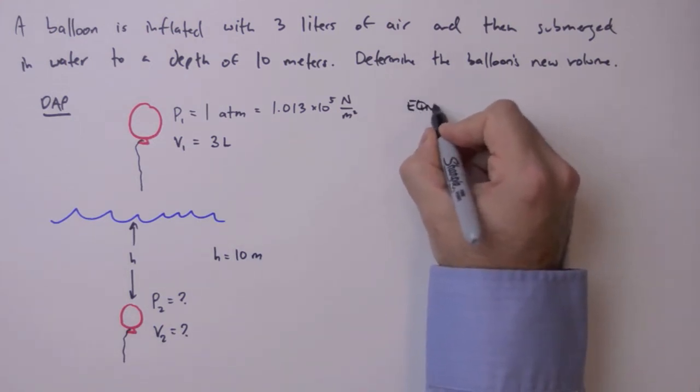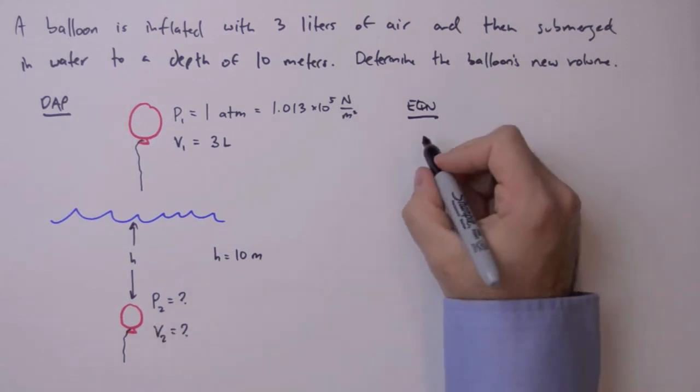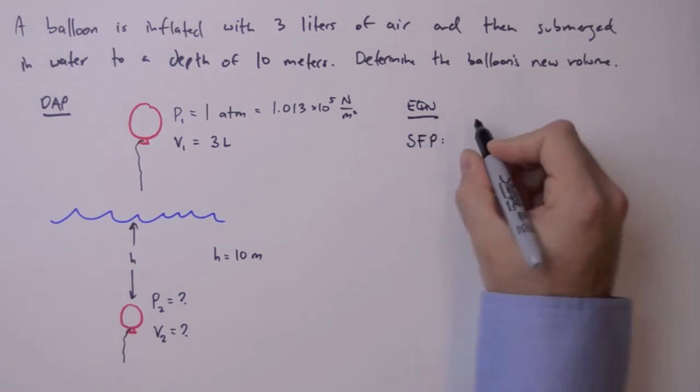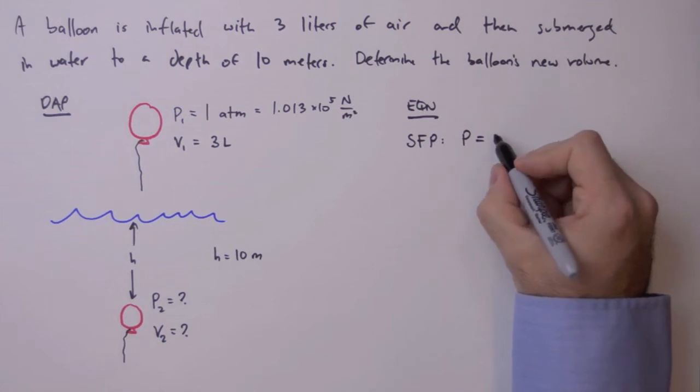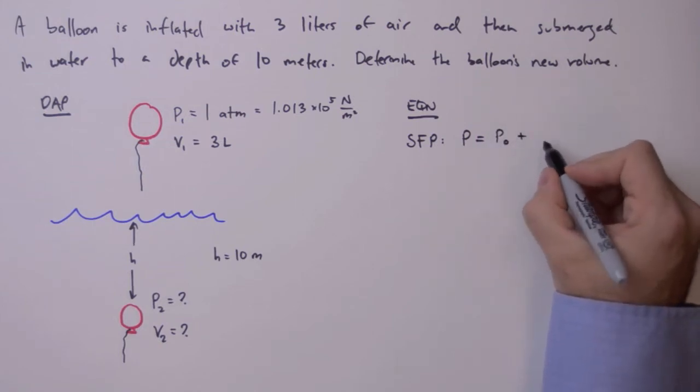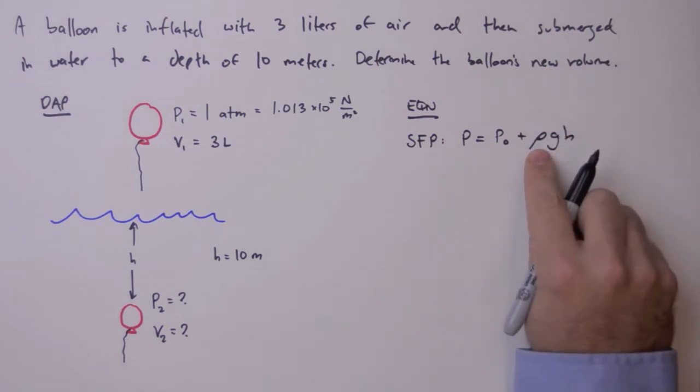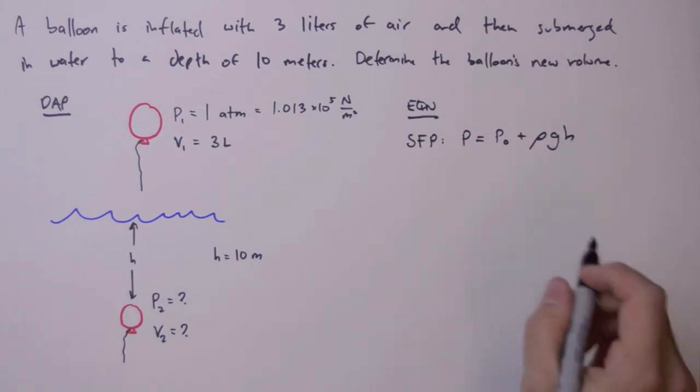We start by determining this pressure, and the way we'll do that is using a static fluid pressure equation, which is P, pressure at some depth H, is equal to P0, the pressure at the surface, plus rho GH. Rho is going to be the density of our fluid. G is going to be the acceleration due to gravity, acting like a constant in this instance, and H is going to be depth.